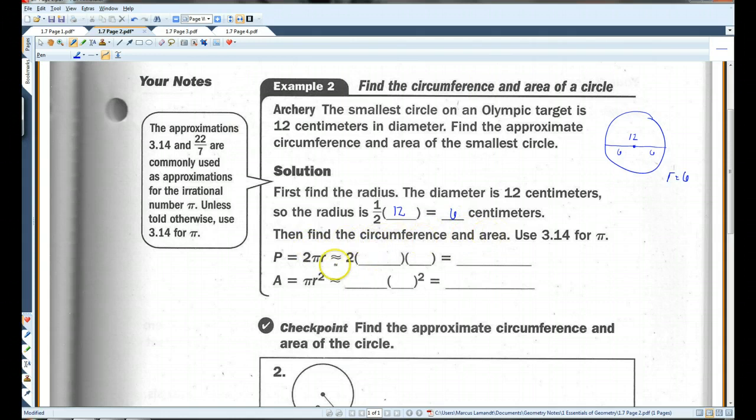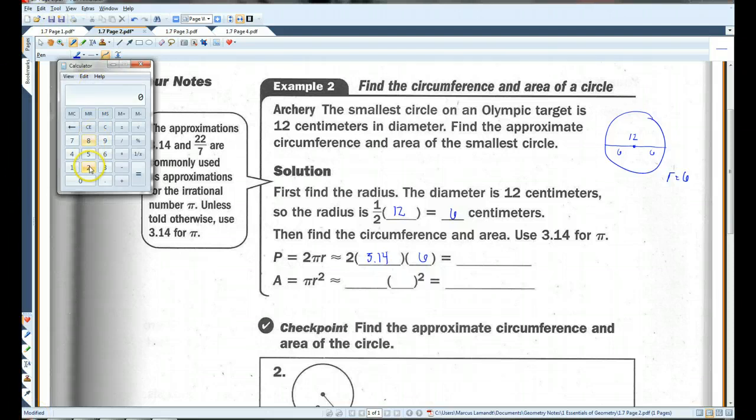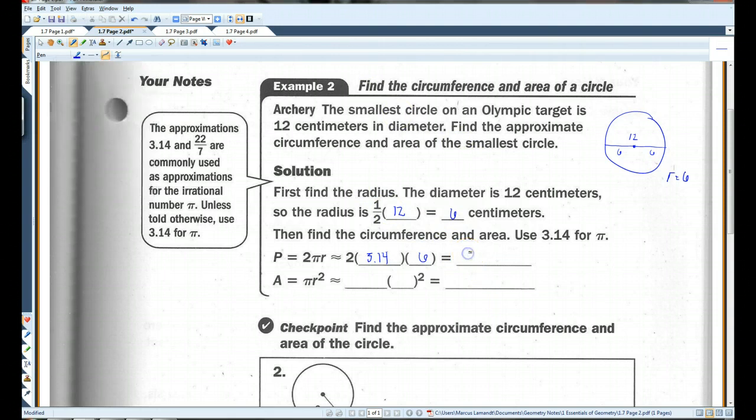So, we can find the circumference and area. 2 pi r. 2 pi, we're going to use 3.14. And r is 6. Let's pull out a calculator. So, 2 times 3.14 times 6. We've got 37.68, approximately. And this is centimeters.